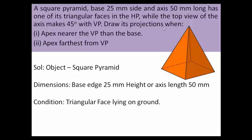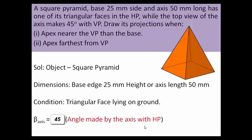The next condition says the top view of the axis makes a 45-degree angle with the VP. Any angle the top view makes with the vertical plane is represented by beta, and in this case beta is 45 degrees — the angle made by the top view of the axis.